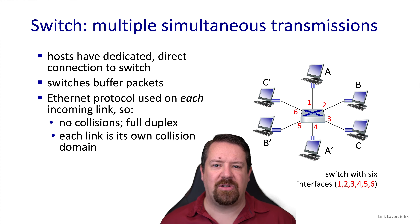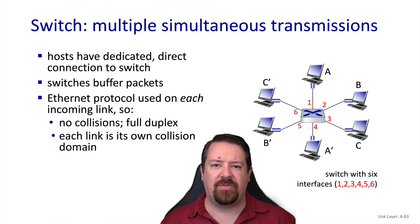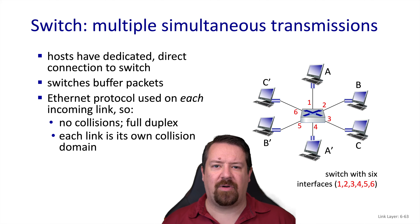Here we have an Ethernet LAN with a switch in the middle. The switch has six ports, one dedicated to each of the hosts. Unlike the Ethernet architectures we talked about before, where it was a shared medium that all the hosts were contending for, each of these links is a separate collision domain. And because there's only two interfaces on each link, they can run at full duplex. So each of the switch's ports operates using the Ethernet protocol independently of all the other ports.